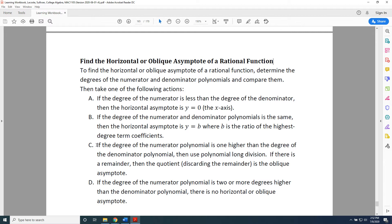Action C: If the degree of the numerator polynomial is one higher than the degree of the denominator polynomial, then use polynomial long division. If there is a remainder, then the quotient, discarding the remainder, will be your oblique asymptote.